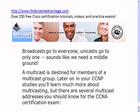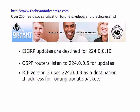A multicast allows us to get traffic to a group of addresses that need the data without wasting bandwidth and processor power by sending packets to devices that don't need them. Some multicast addresses you should know for your CCNA exam: EIGRP updates are destined for 224.0.0.10, OSPF routers are listening to 224.0.0.5, and RIP version 2 uses 224.0.0.9. RIP version 1 uses the broadcast address — that's one of the drawbacks of RIP version 1, that it uses broadcast to send out routing update packets.